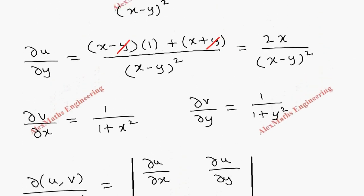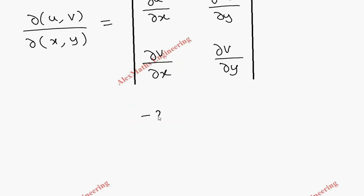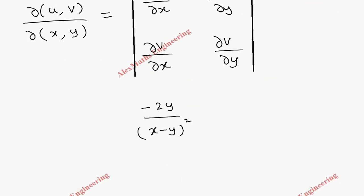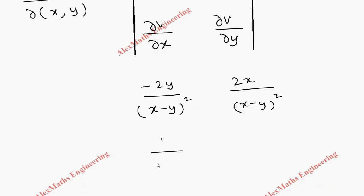Let's fill in the determinant. ∂u/∂x is minus 2y by (x minus y)², ∂u/∂y is 2x by (x minus y)², ∂v/∂x is 1 by (1 plus x²), and ∂v/∂y is 1 by (1 plus y²). Now we evaluate this determinant.